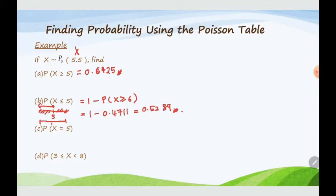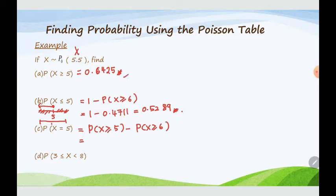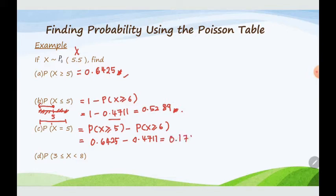When we want to use the table to calculate P(X = 5), we take P(X ≥ 5) minus P(X ≥ 6). P(X ≥ 5) is from part a, which we already read from the table, minus P(X ≥ 6) which is 0.4711. So when you subtract, you get 0.1714.